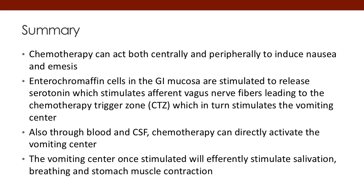So there can be two mechanisms — both central and peripheral — for nausea and vomiting induced by chemotherapy. That activation of the vomiting center causes an efferent signal going away from the brain that stimulates salivation, breathing changes, and stomach muscle contraction, and that stomach muscle contraction makes you vomit.